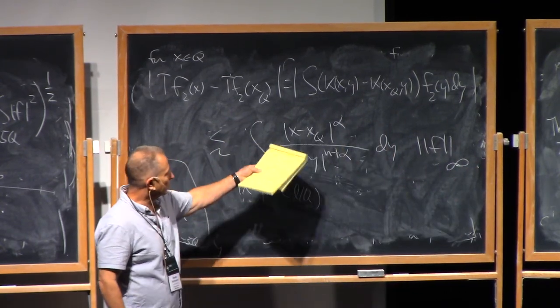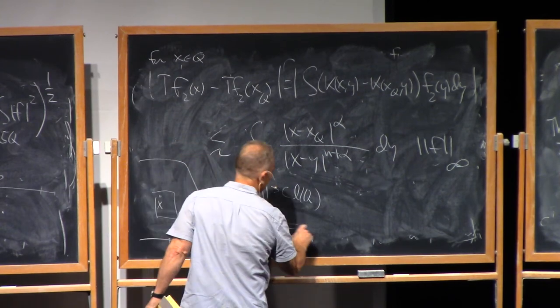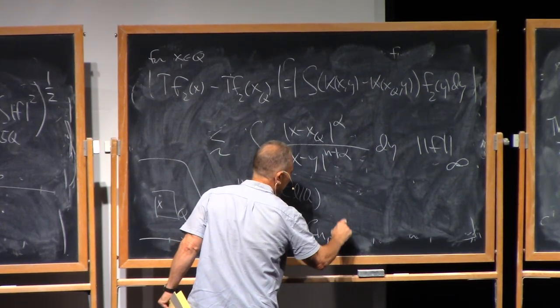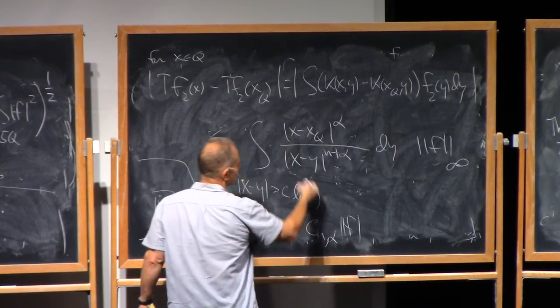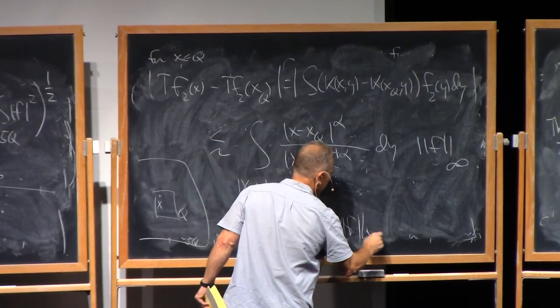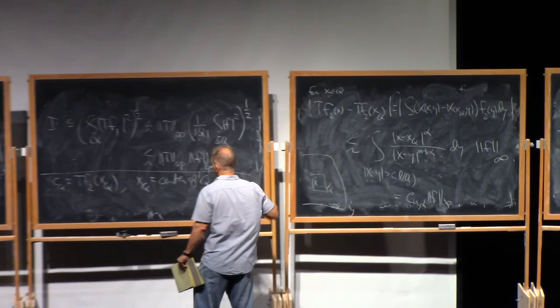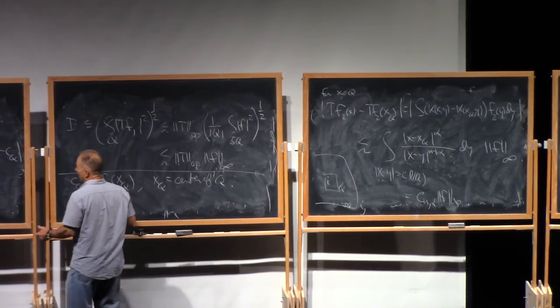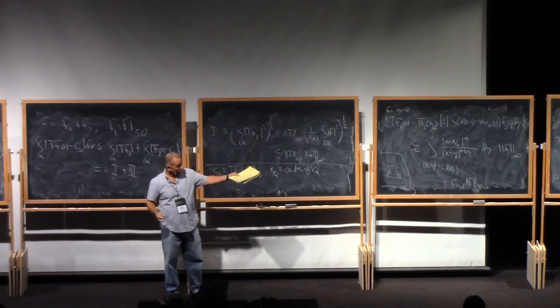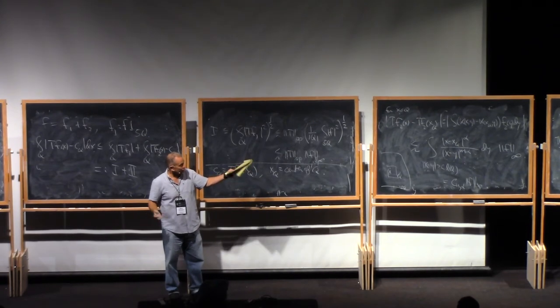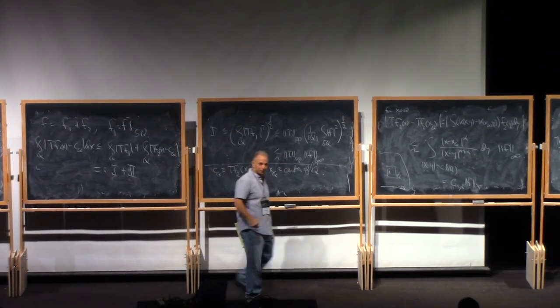And this just integrates to give you some constant depends on N and alpha. So that's actually a point-wise bound for this thing, and then you integrate it. You take its average over Q. Since it's point-wise bounded, then the average is also bound by the same thing and you're done.